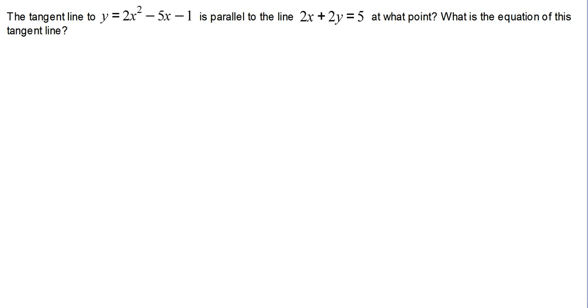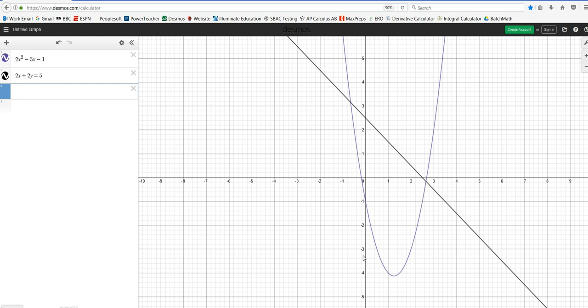So we can look at the graphs. In blue we've got the parabola, and in black we have the linear equation. We want to know where on this parabola the tangent line has the same slope as 2x plus 2y equals 5.